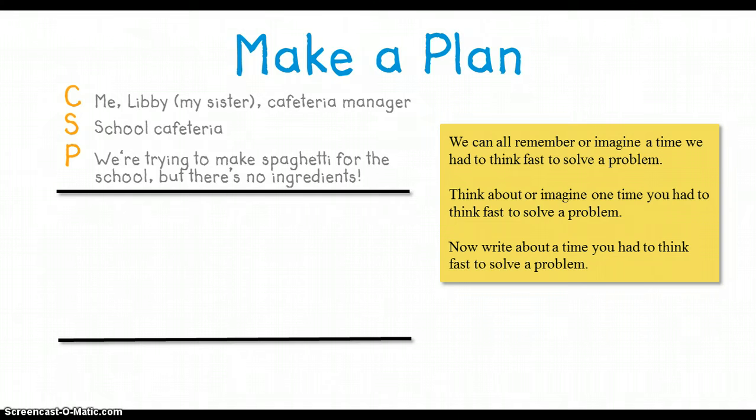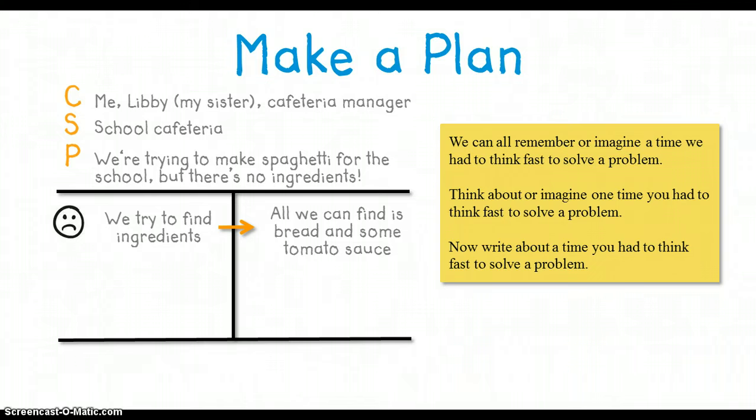Now I'm ready to plan out the first attempt that fails. So the first thing we try to do is we try to find the ingredients. Now I have to plan out why that didn't work. Why did that fail? Well, it failed because all we can find is bread and some tomato sauce. Now I need to plan out the second attempt that fails. So the next thing we try to do is we try to make peanut butter and jelly.